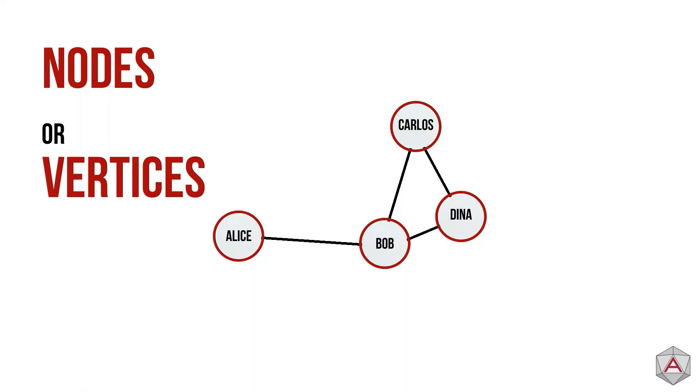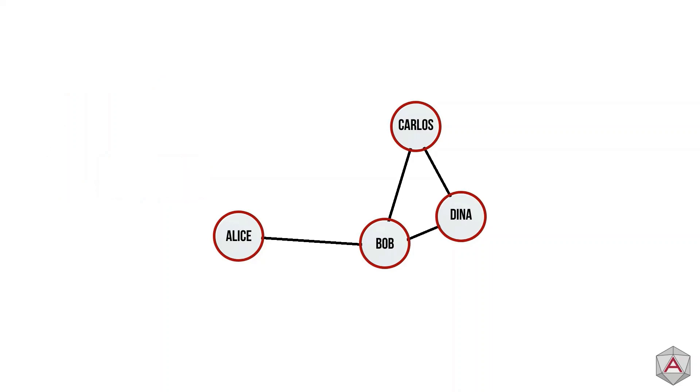In graph theory, these grey circles are commonly called nodes. Historically, and in the field of discrete mathematics, you may see nodes referred to as vertices. In our example, the friends are the nodes, but they can represent anything such as products, places, or concepts.